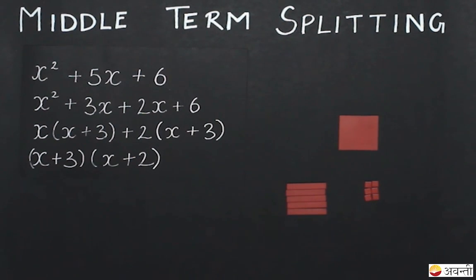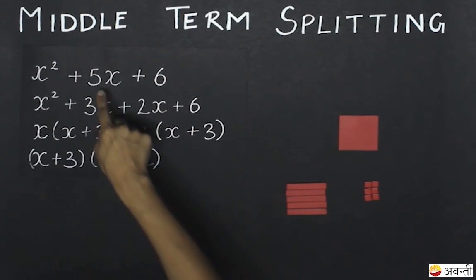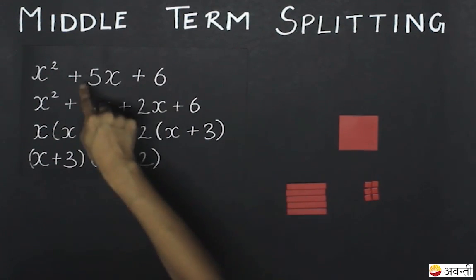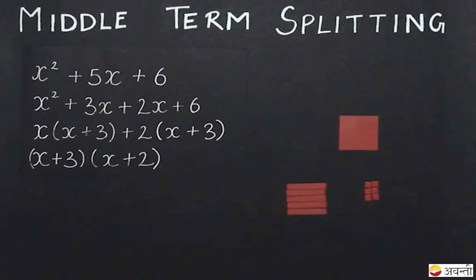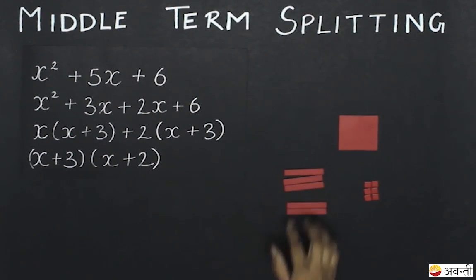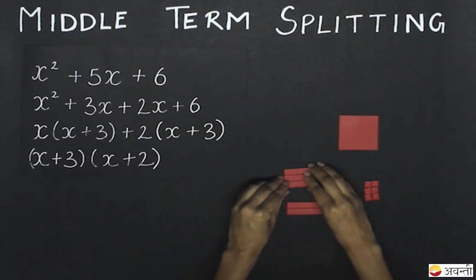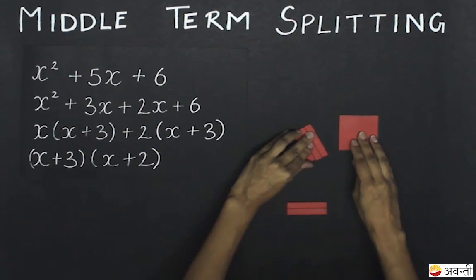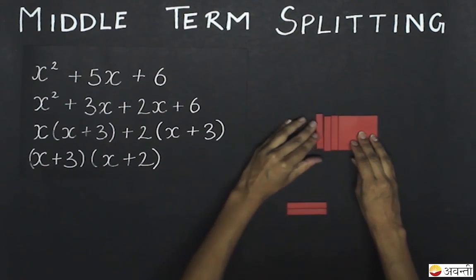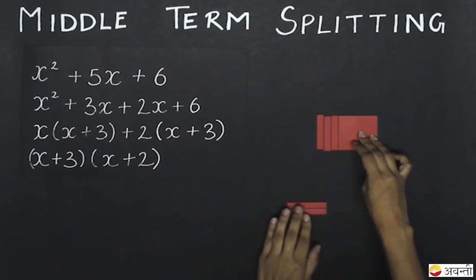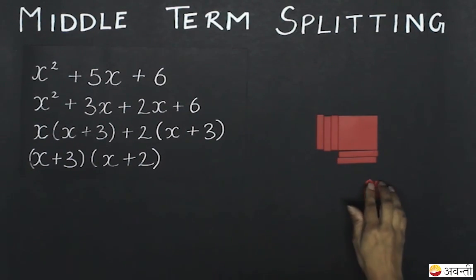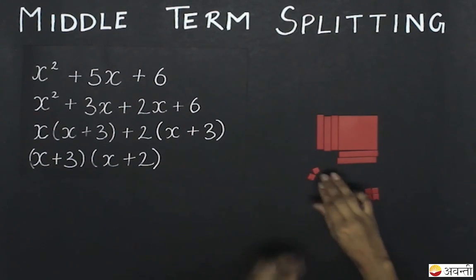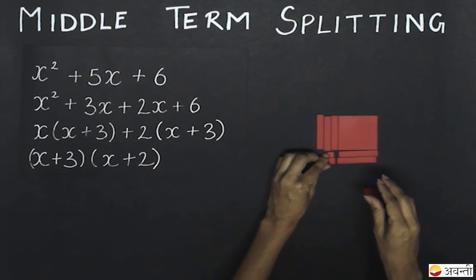According to middle term splitting, I will split 5x into 3x and 2x — that is, I will split it like this. If I place 3 of these strips on one side and 2 of the strips on another side, and place these 6 units in the corner.